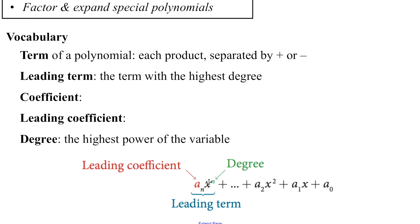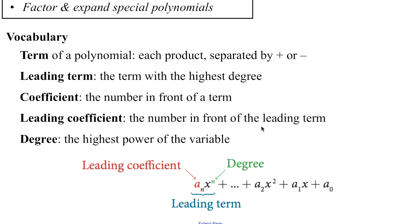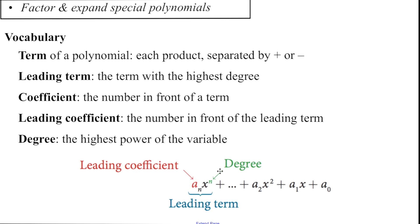Well, the degree is the highest power on the variable. So down here in this example on your notes, the highest degree is the variable that has the biggest number exponent. The coefficient is the number in front of a term — it's the number part of a term. And the leading coefficient is the number in front of the leading term. So here we have in general form — don't let this formula scare you — this is just the general form of a polynomial equation where a sub n is called the leading coefficient. It's the number in front of the x term that has the highest exponent. The degree of the polynomial is n — that's the highest exponent — and these go in decreasing order. The leading term is that very first term that has the highest degree.